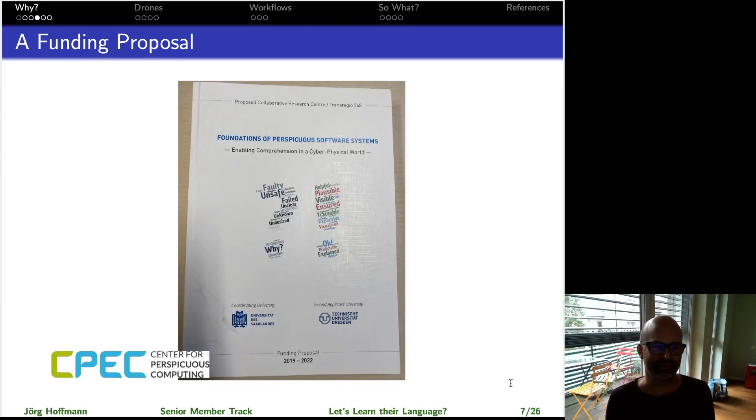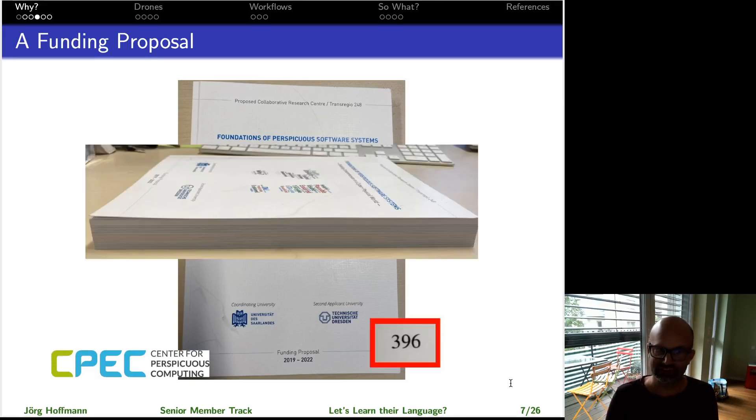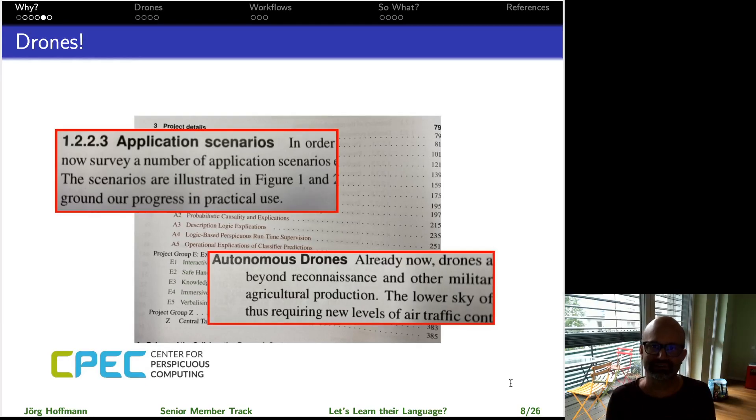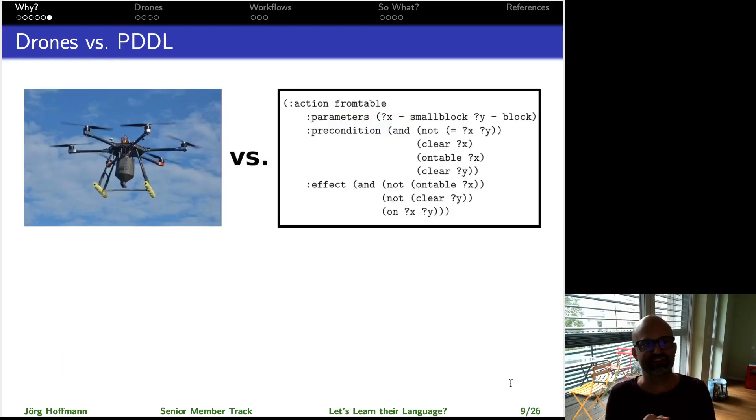Now, how come I wrote this paper? First I wrote this proposal, it's a pretty big proposal and I didn't write it alone but together with 20 colleagues essentially, many many projects. To bind all of this together you need a use case. After long debates, the only thing or the thing we could all somewhat relate to were autonomous drones, which puts me into the position of having to model autonomous drones in PDDL.